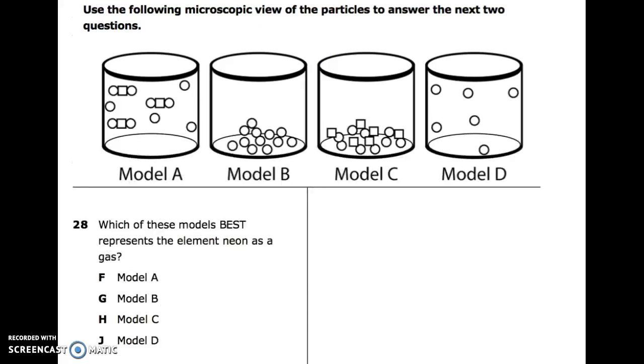Use the following microscopic view of the particles to answer the next two questions. Model A, Model B, Model C, Model D. 28: Which of these models best represents the element neon as a gas? F. Model A. G. Model B. H. Model C. J. Model D.